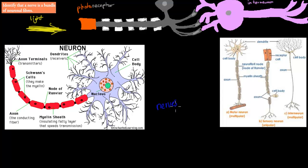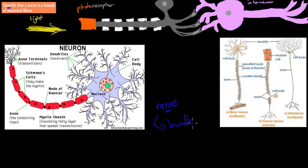The dot point says to identify that a nerve is a bundle of neural fibers. So that's more or less the answer — what are nerves? Nerves are a bundle of neurons. That probably won't fully satisfy you, so I'm going to talk a bit more about them, but that's basically what nerves are: a bundle of neurons.